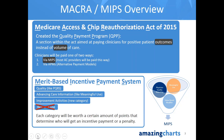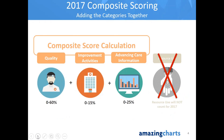Each performance category is worth a certain number of points, and when factored together they comprise your composite score — think of it as your final grade. Resource use is not applicable at all in 2017 reporting. The four categories are weighted by difficulty: Quality is 60% of the total score, Improvement Activities is 15%, and Advancing Care Information is worth 25%.